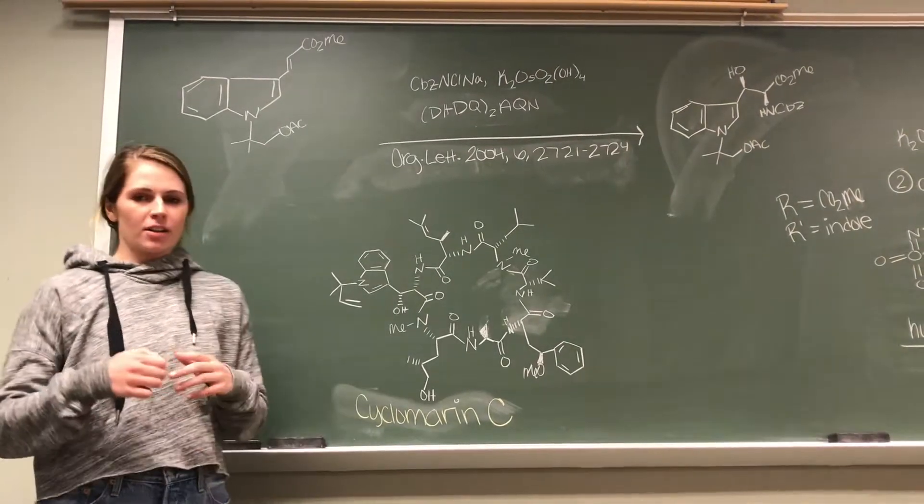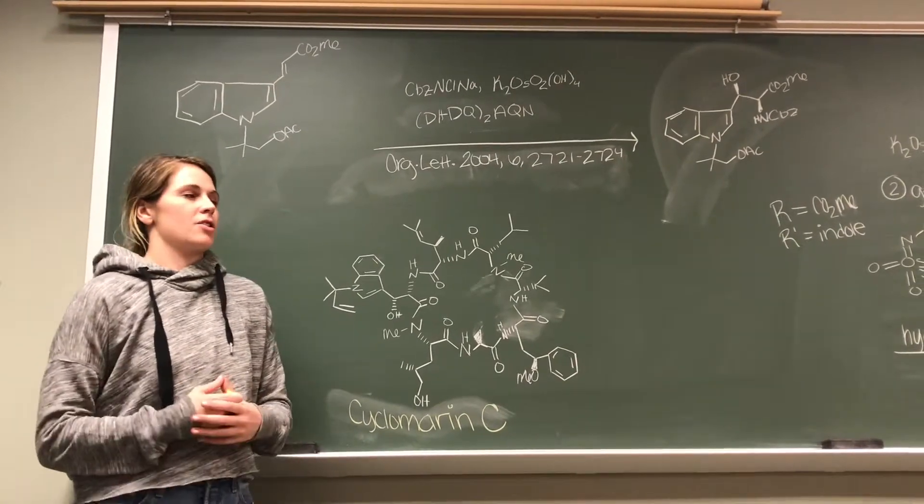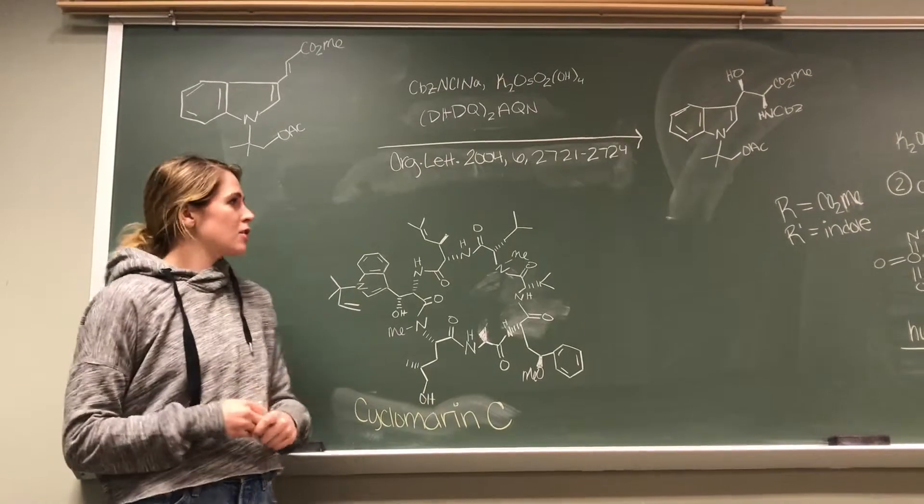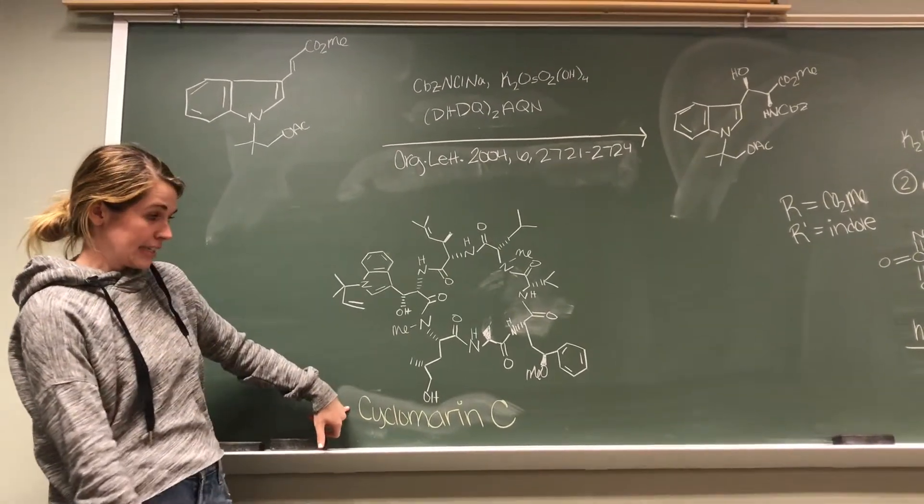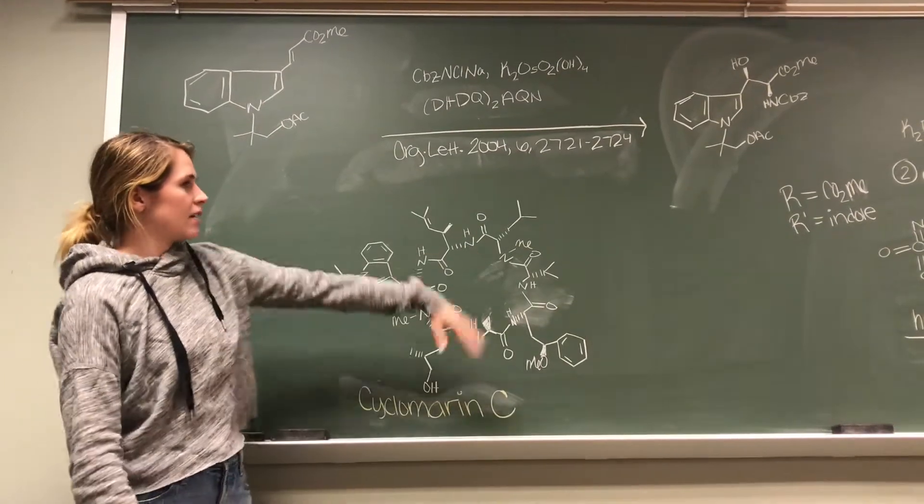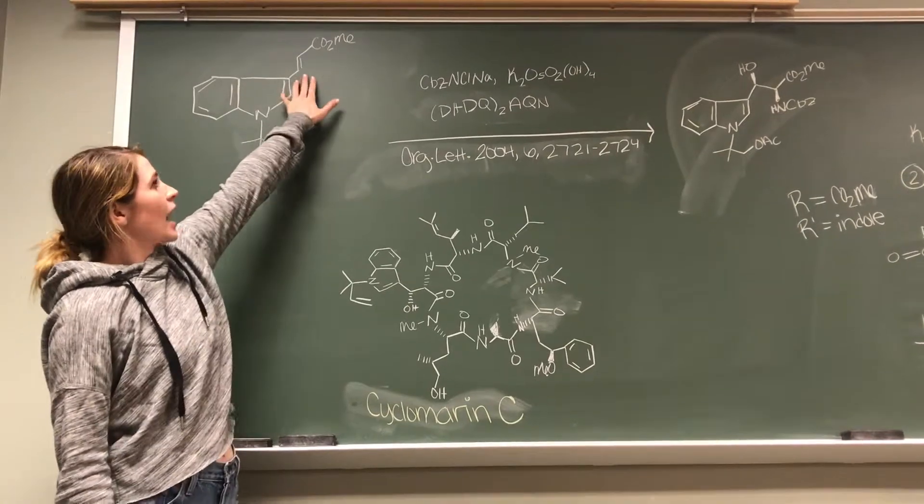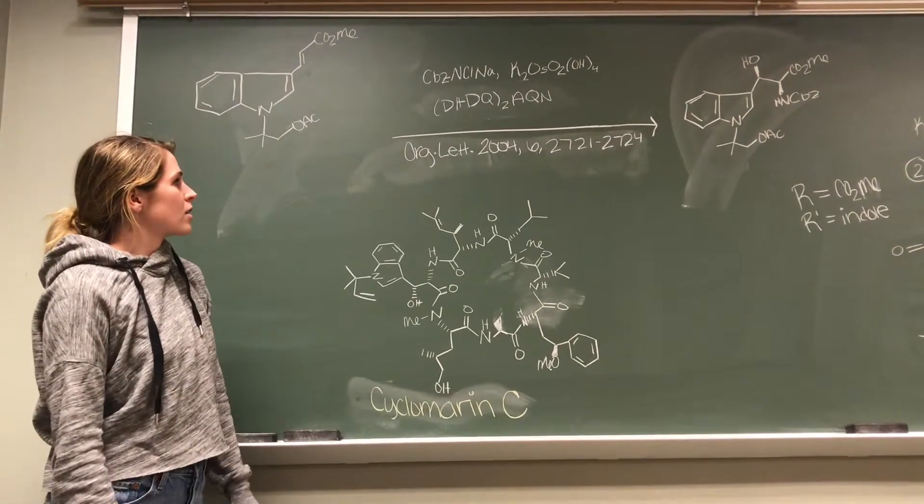So now that we've talked about it in general, kind of what the aminohydroxylation is, the asymmetric aminohydroxylation, we're going to look at it when it was employed in a total synthesis. So we're looking at a total synthesis of this big macromolecule, cyclomerine C. But way in the beginning of the synthesis, we're starting with an indole, which has a couple groups off of it. And you can see that we have an alkene. So that's our starting material for the aminohydroxylation.